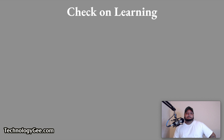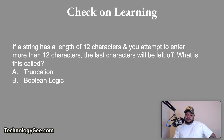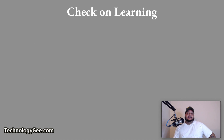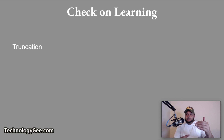Next question: if a string has a length of 12 characters and you attempt to enter more than 12 characters, the last characters will be left off. What is this called? Is it truncation, Boolean logic, char overflow, or floating point? The answer is truncation. Remember the picture of the name Bob Smith — on the bottom example, the H on Smith was cut off because the character limit was set lower than the full length of Bob Smith.